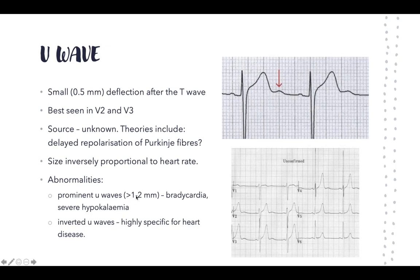If the U wave is more than one to two millimeters, it can be a sign of bradycardia or severe hypokalemia. Inverted U waves are highly specific for heart disease in general. On the ECG shown, you can see the U wave following the T wave — in some areas it's quite large, more than two small boxes, and is considered prominent.